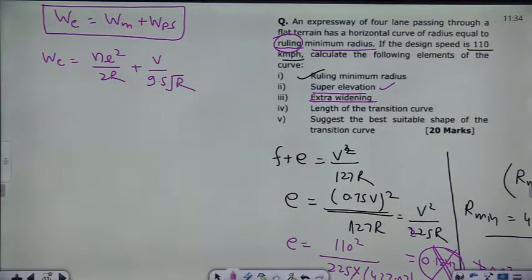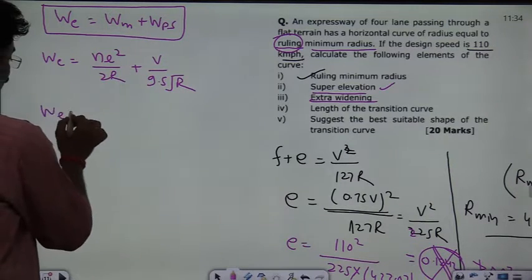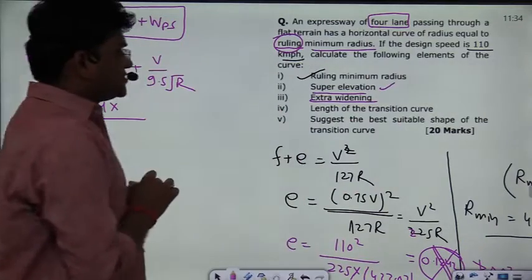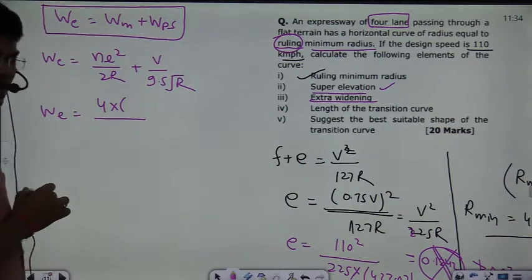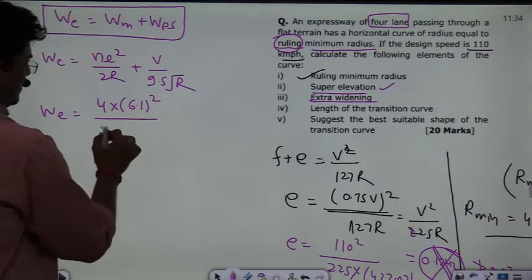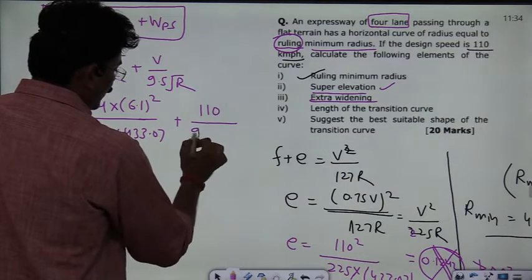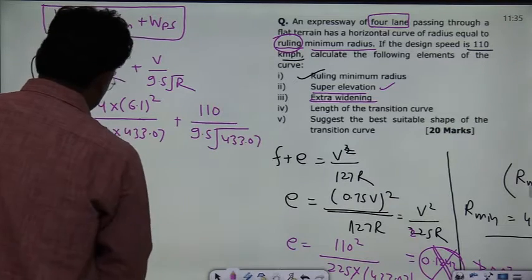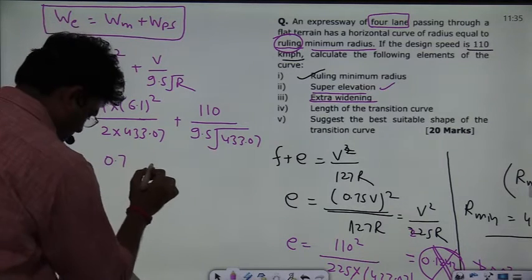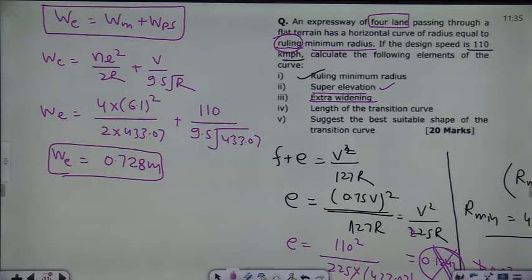However, for calculation purposes, the formula is: extra widening = NL² / 2R + V / (9.5√R). Here N = 4 lanes, L = 6.1 m (wheelbase per IRC), R = 433.07 m, and V = 110 km/h. Substituting: (4 × 6.1²) / (2 × 433.07) + 110 / (9.5 × √433.07) = 0.728 meters.